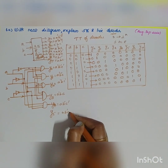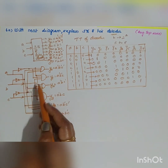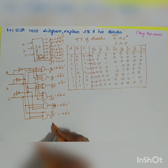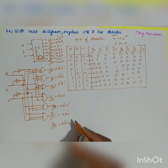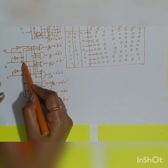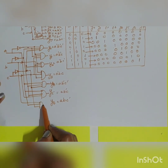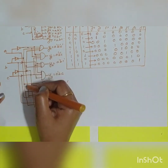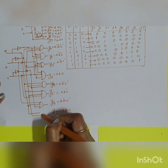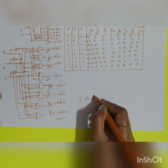For Y6, inputs A, B, and C' give ABC'. Finally, Y7 uses inputs A, B, and C giving ABC. This completes the gate-level circuit diagram of the 3-to-8 line decoder.